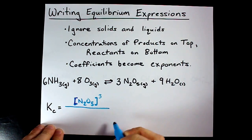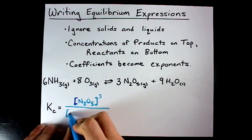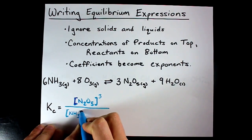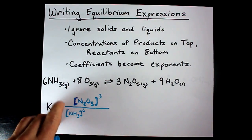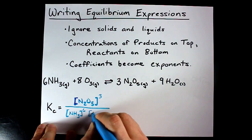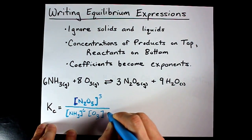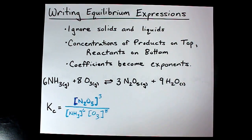We will need our reactants on the bottom. I have NH3 as a reactant with a power of six. It was a gas so it gets included, and I have ozone with a power of eight and it was a gas so it gets included.